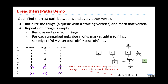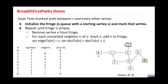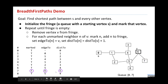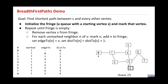Next comes vertex 3, removed from the queue—how many unmarked neighbors does it have? None, so we don't do anything. Then 6 is active—it has one unmarked vertex; we update those three things. Then 8 is next—nothing interesting happens. Then 7—nothing interesting happens. And we're done. That's breadth-first search. At this point we know the distance to all vertices from the source, and we've stored the shortest path through every single vertex, all in one array.